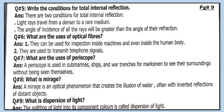Now open your winter pack and come to page number 9. We will do the question answers of unit number 9. Question 5: Write the conditions for total internal reflection. There are two conditions: first, light rays travel from a denser to a rare medium; second, the angle of incidence of all the rays will be greater than the angle of their reflection. Question 6: What are the uses of optical fibers? They can be used for inspection inside machines and even inside the human body.